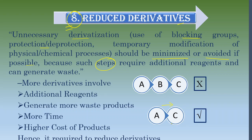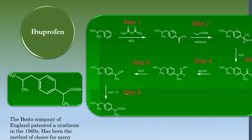Principle 8 says: why don't you find a process where the number of steps is less? Try to achieve your target within a minimum number of steps. When you increase the number of derivatives — meaning more steps — it involves additional reagents, a higher cost of the product, more waste, and more time. So one extra step affects so many parameters. They say: reduce the steps, reduce the derivatives, if at all possible.